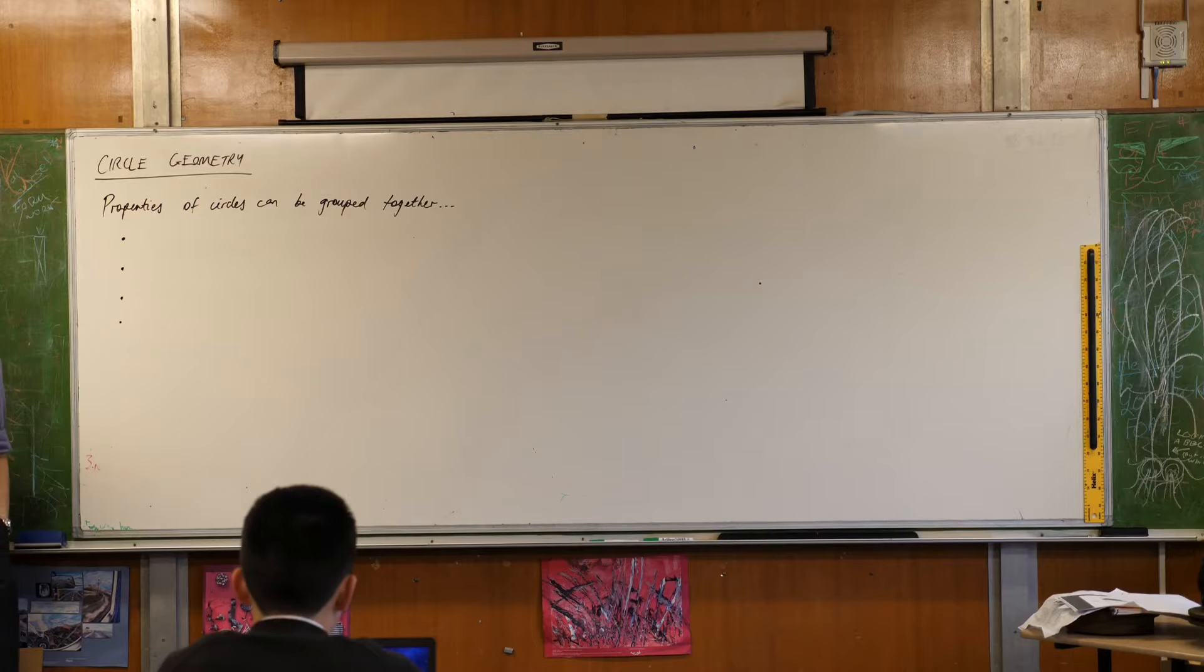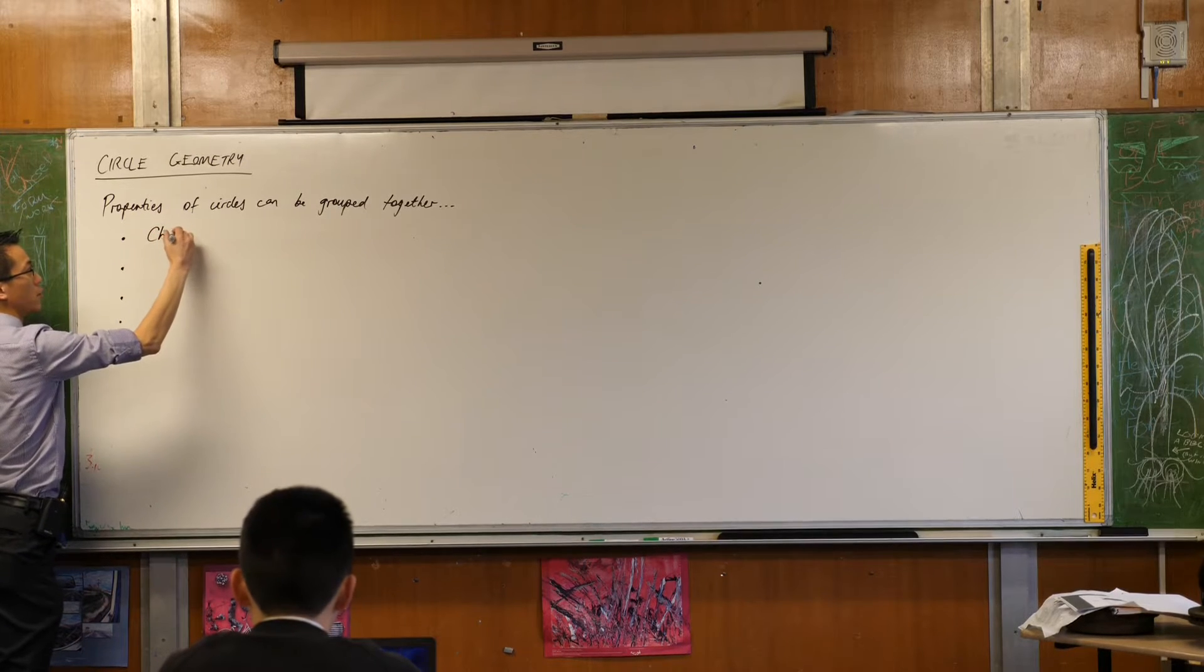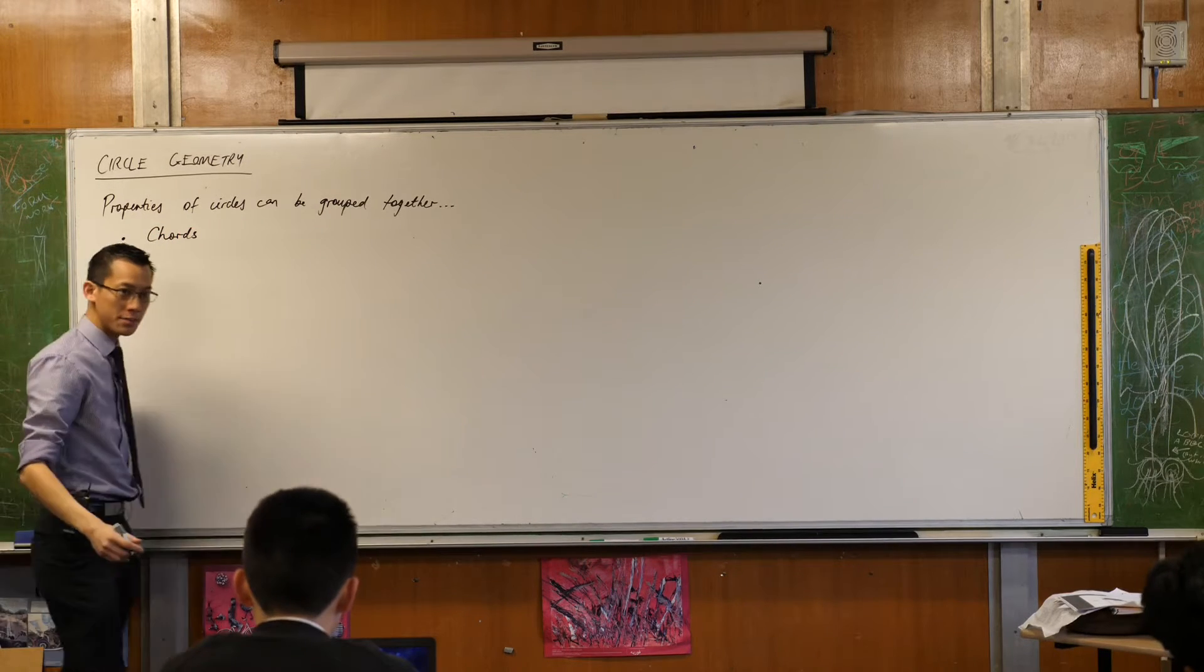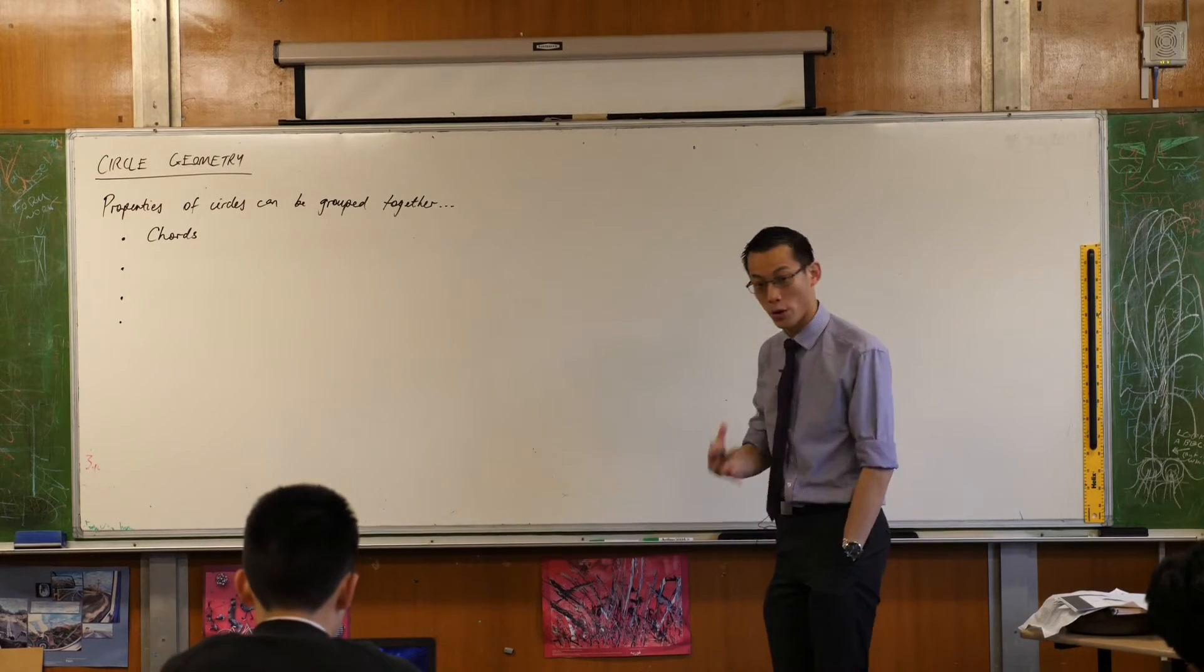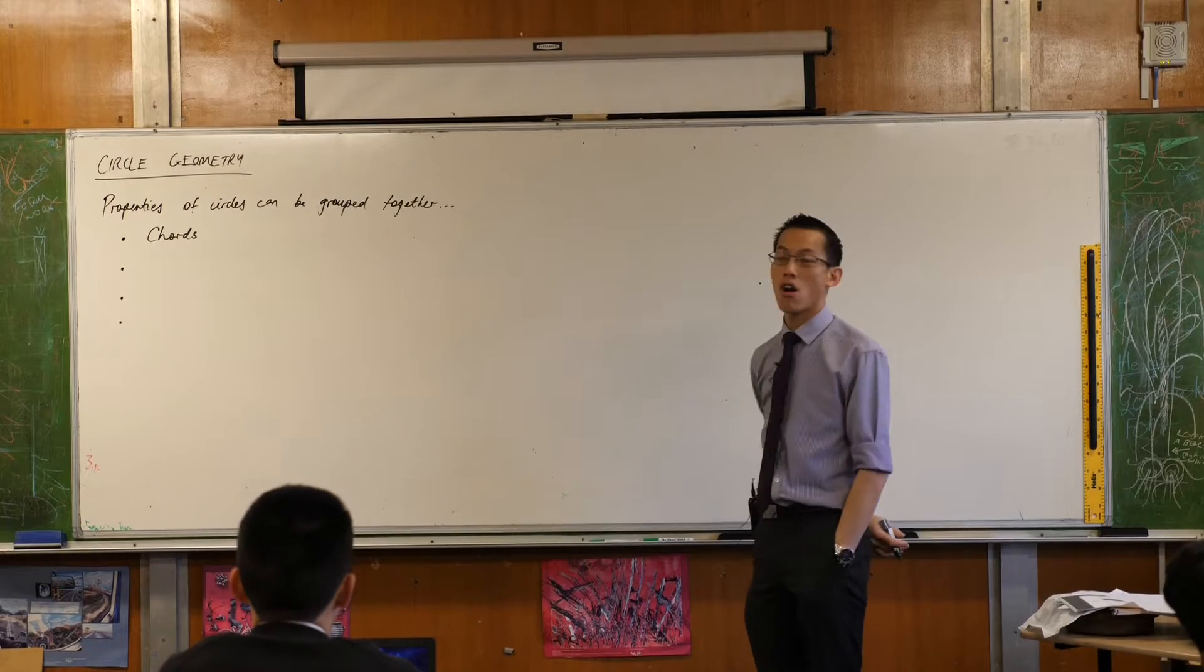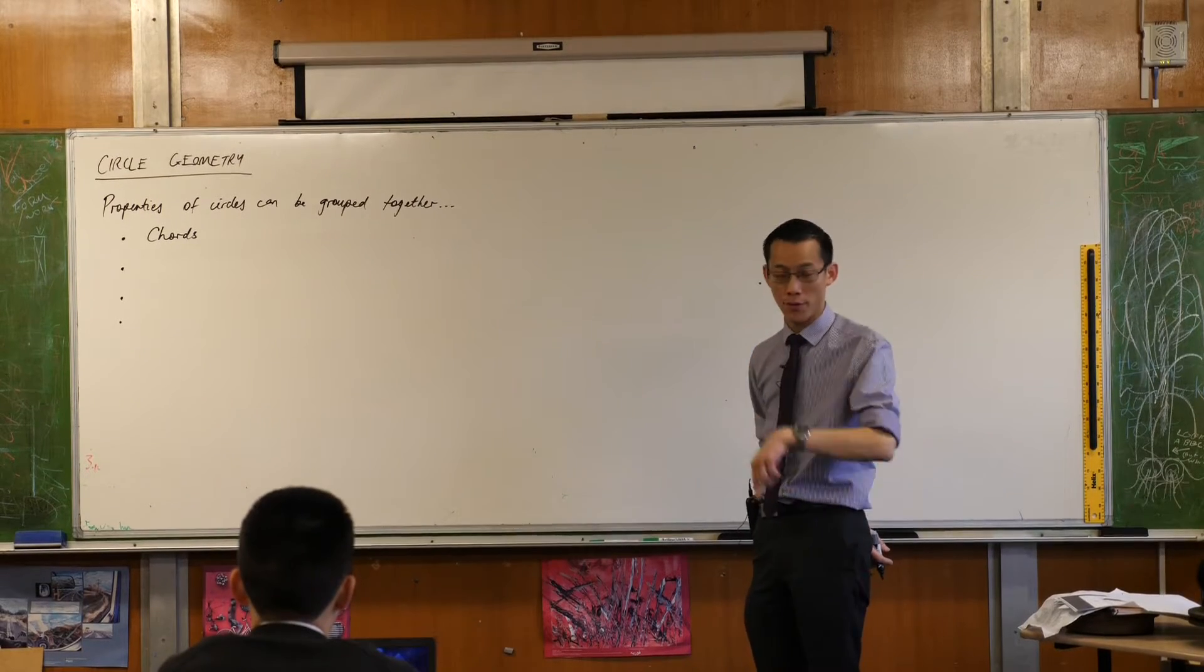So here are the categories. The first one are what we call chords. We're going to draw all of these in a second. Within a circle, if you take any two points on the circumference and join them you get a chord, and there are a whole bunch of chord properties. That's what we're going to focus on this lesson.